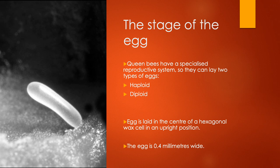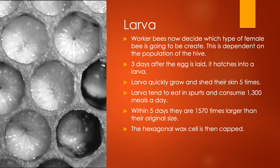Next we move on to larva. For the female eggs, worker bees play an integral role in deciding which type of bee they're going to create, and this is all dependent on the population of the hive. If there are quite a few worker bees, then the worker bee will feed the egg with a queen or royal jelly, and that will produce a queen bee. This jelly is richer in sugar and it's actually thicker. If they want to produce a worker bee, they will produce some worker jelly for the larva to eat.